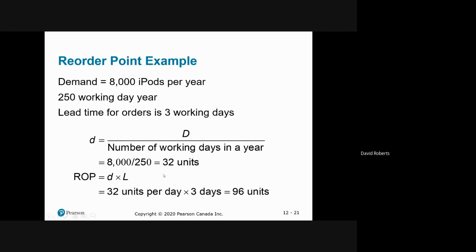So here's a graphic representation of reorder point. And an example, in this case, you have 32 units a day. It takes three days to replenish. When you have 96 units left, you replace an order.